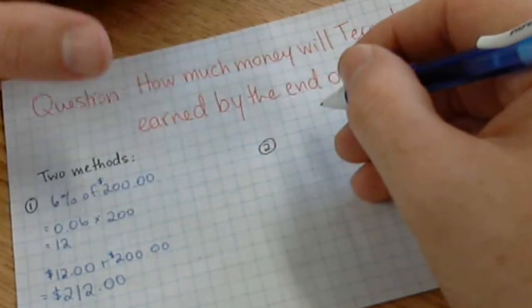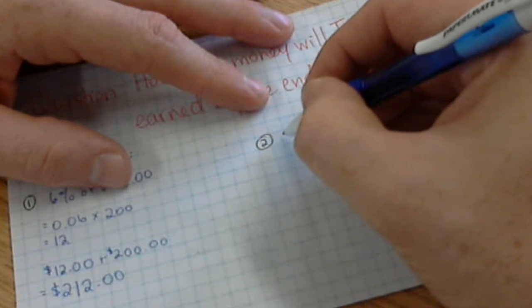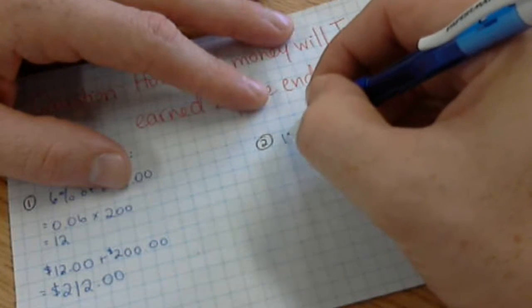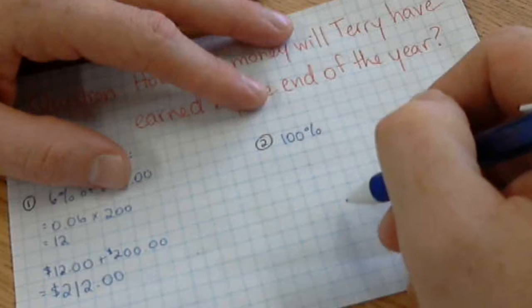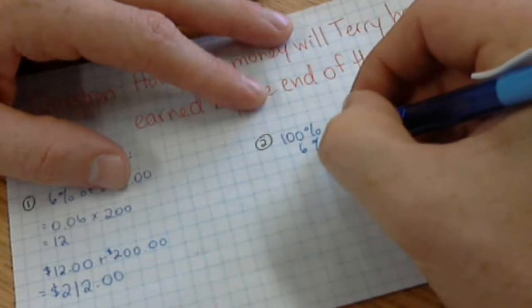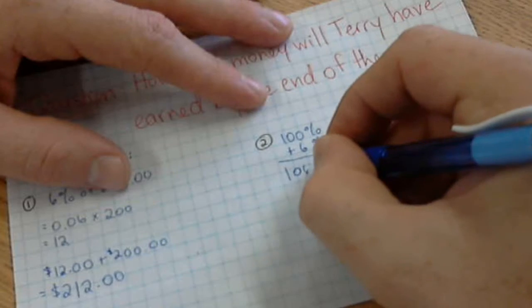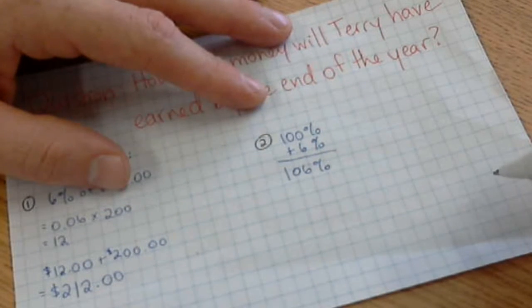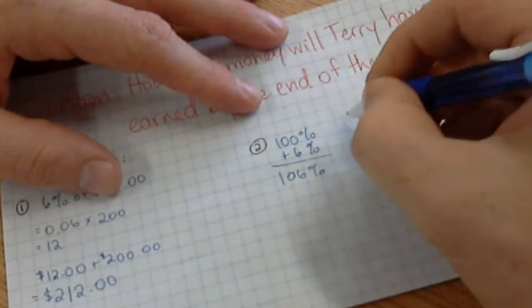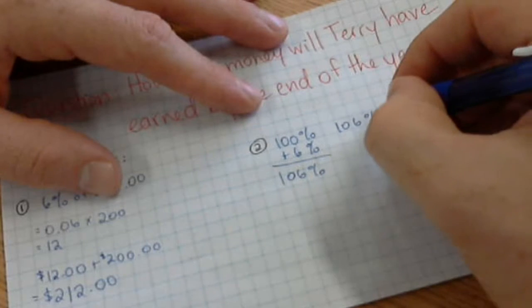To include the $200, I need at least 100%—that'll be all of the $200. Then I need that other 6% which shows how much interest she's going to earn. When I add those two things together, I get 106%. So I can find out 106% of $200.